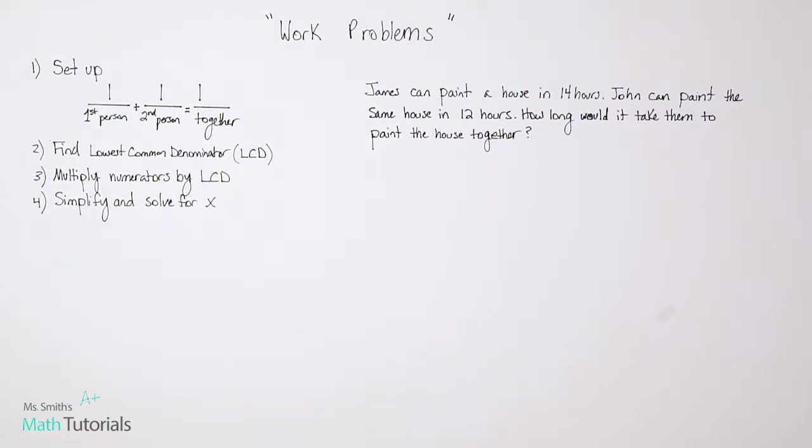Okay, so let's look at an example together. James can paint a house in 14 hours. John can paint the same house in 12 hours. How long would it take them to paint the house together? We're going to use that setup that we described in step one.